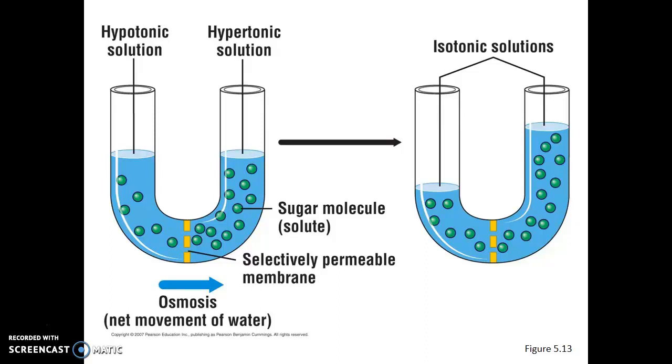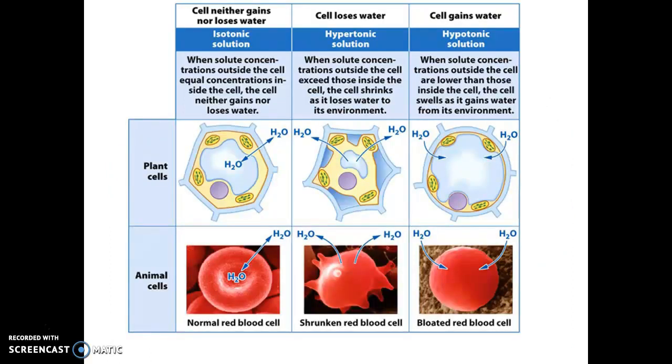Now why is this significant? Why is this important to understand for biology and for health sciences? Well it goes back to how cells work. If plant cells are placed into an isotonic solution, they're not going to have a lot of water rushing into their cells.